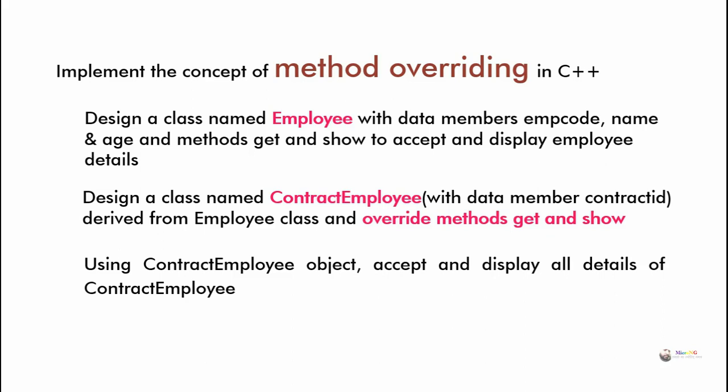While calling an overridden member function using an object of the derived class, the member function of the derived class is invoked and the function of the base class is ignored. So to call the base class overridden function from the derived class, we have to use the name of the parent class followed by the scope resolution operator — that is, parent class name, double colon, and the function name.